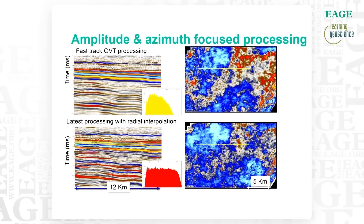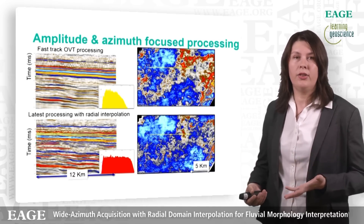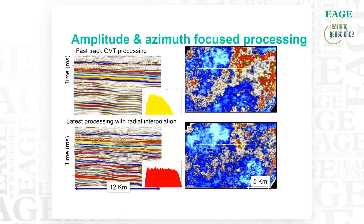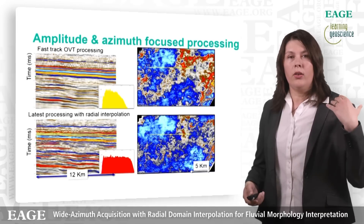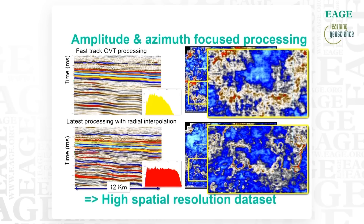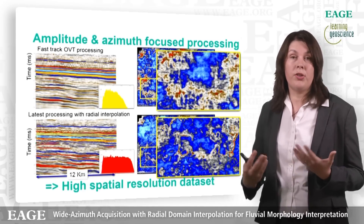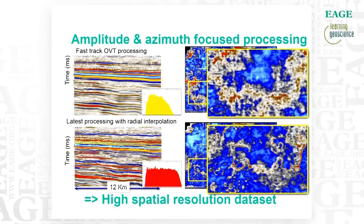All this hard work does pay off. Using the same underlying seismic data, there is significant improvement between the original fast-track OVT processing and the latest processing with radial interpolation, with improvements in both temporal and spatial resolution. If we zoom into the horizon slice at the main target, we can see very small details within the fluvial channel system. The position of the fluvial channel system is the same, but now we can target individual details, which will give us the opportunity for smart well placement.